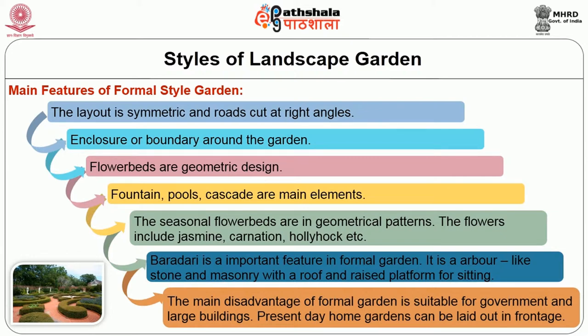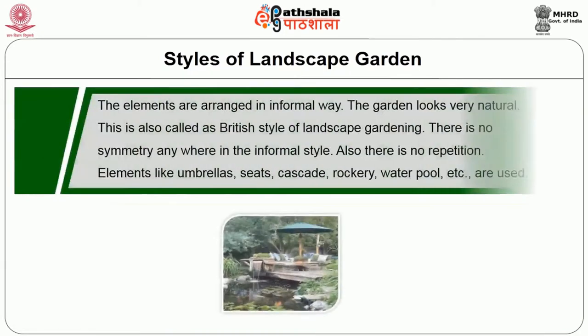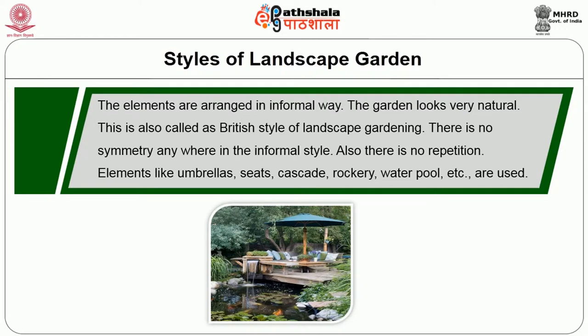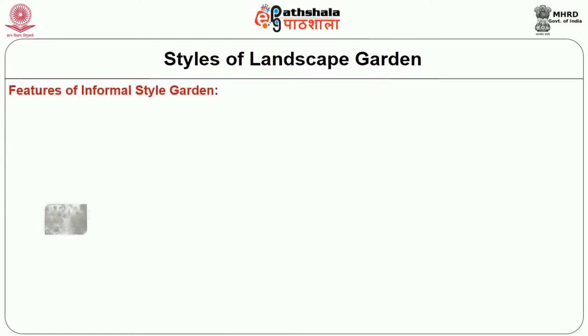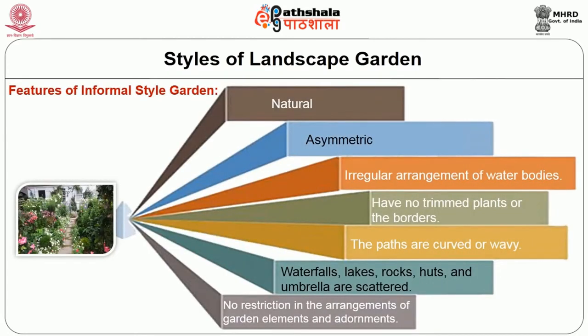Then, informal style. This is also called as British style of landscape garden. The elements are arranged in a very informal way. There is no symmetry anywhere in the informal style, and also no repetition. Elements like umbrellas, seats, cascade, rockery, waterfall etc. are used. The features are: it is natural and asymmetric; irregular arrangement of water bodies; no trimmed plants or borders; the paths are curved or wavy; waterfalls, lakes, rocks, cuts and umbrellas are scattered; no restriction in the arrangement of garden elements and adornments.